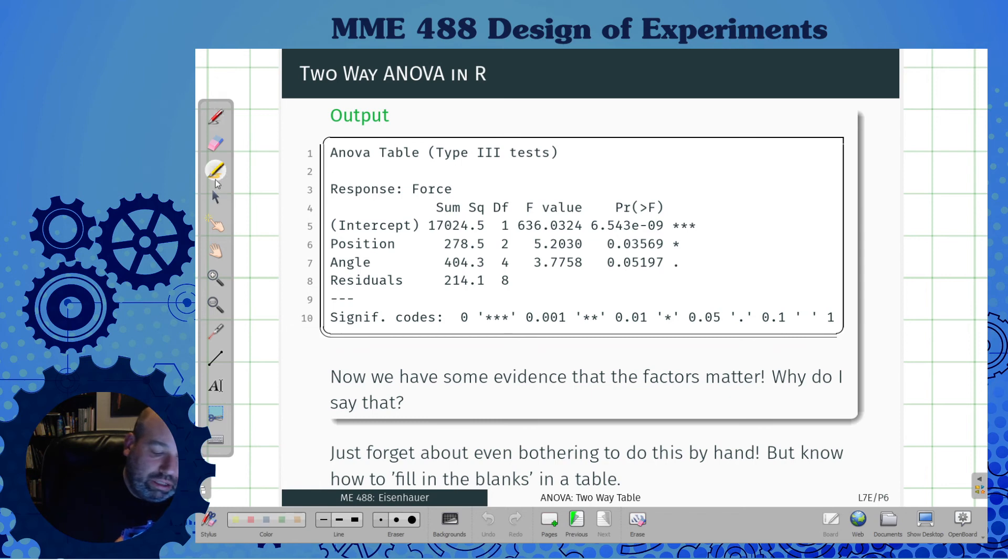Why do I say that? Because now that I've added this position, this position one goes with an F value of five, and it's big enough because this is a lot smaller than 0.05 or smaller than my alpha, for position that actually matters.